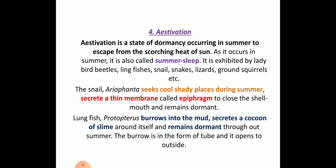Next, estivation. Estivation is the state of dormancy occurring in summer — so hibernation is winter sleep and estivation is summer sleep. It happens in snakes, lizards, and ground squirrels. For example, snails seek a cool, shady place during summer and secrete a thin membrane called the epiphragm, which helps close the shell mouth. The snail coils inside the shell and the secretion seals the opening, allowing it to undergo summer sleep.